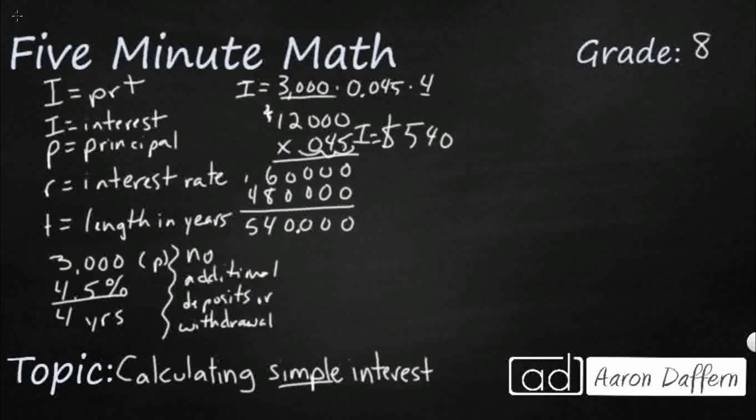What they might ask you is, what is the new amount? The new amount is the interest plus the principal. So that's your $540 plus your initial $3,000. Sometimes a problem might ask what's the new balance, and it's the principal plus that interest: $3,540.